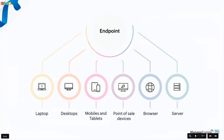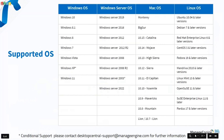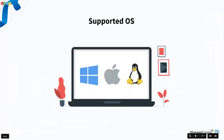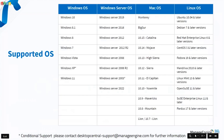An endpoint could be any of these devices: a laptop, a desktop, mobiles and tablets, point-of-sale devices, and even browsers and servers. Desktop Central supports Windows, macOS, and different flavors of Linux — both workstation and server editions under Windows, multiple macOS versions, and various Linux distributions.